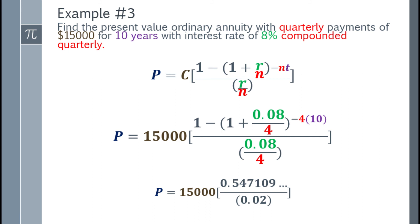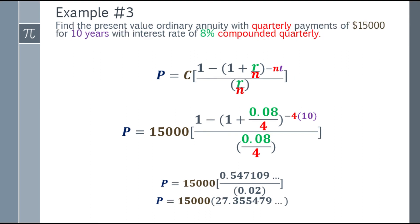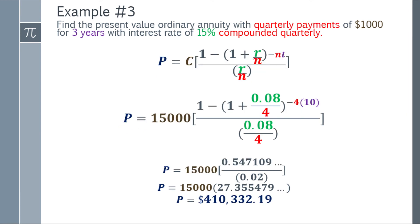Now simplify it further. Divide the 0.554 something by 0.02 and the answer will be 27.355479 and so on. Lastly, multiply it by $15,000 and the answer will be $410,332.19.